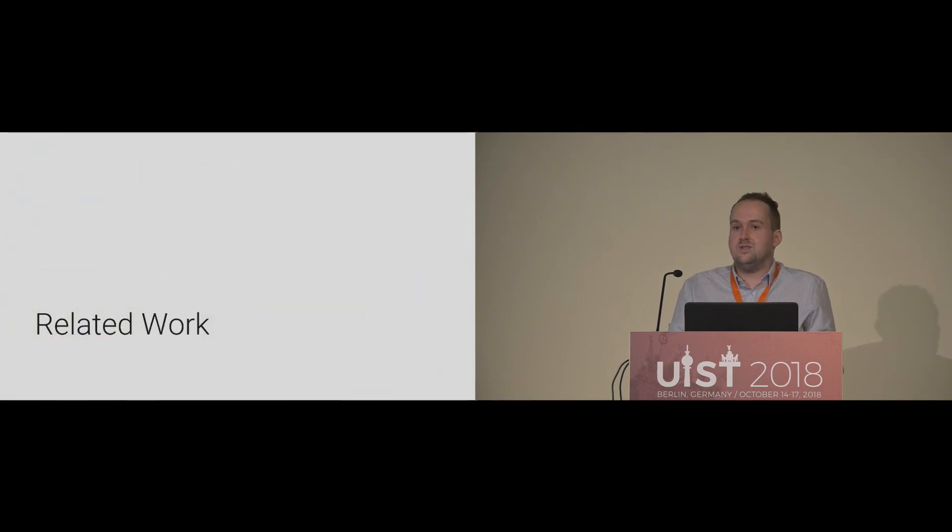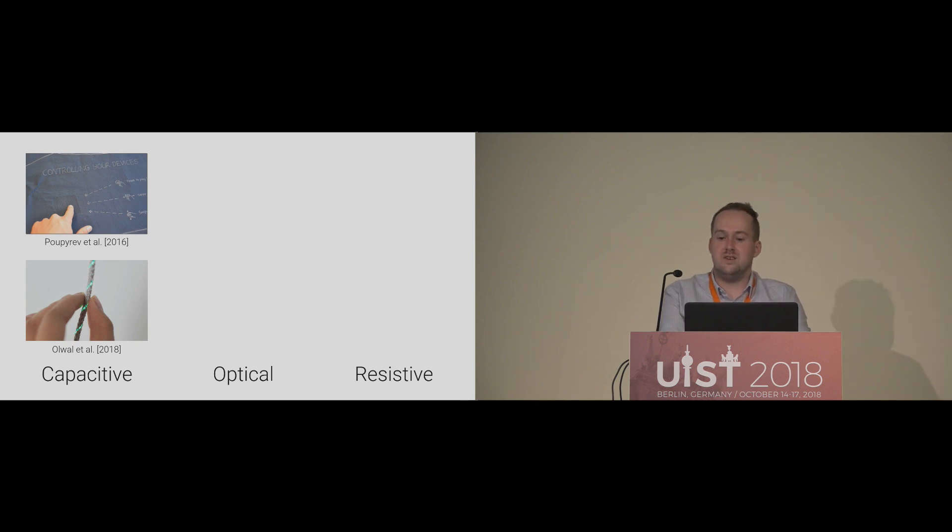By researching the related work, we discovered that the most common pressure sensing techniques for textiles are capacitive, optical, and resistive. Capacitive approaches are based on fabric capacitors that consist of conductive yarn or fabric used as electrodes and non-conductive fabric which is used as dielectric.